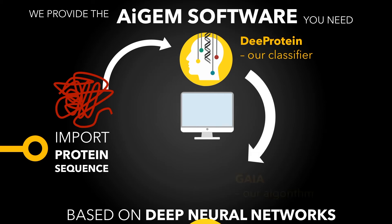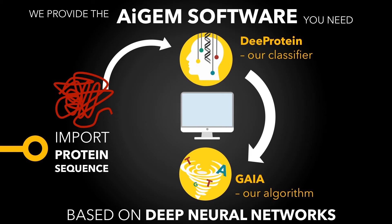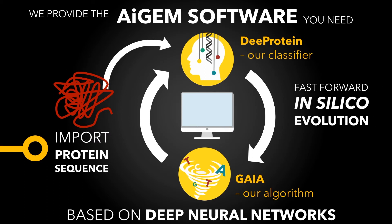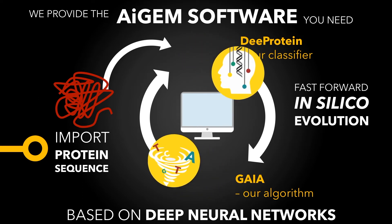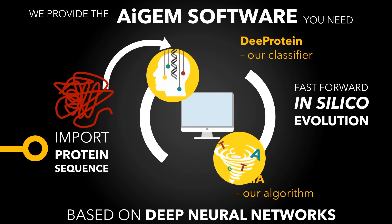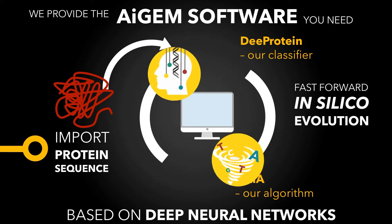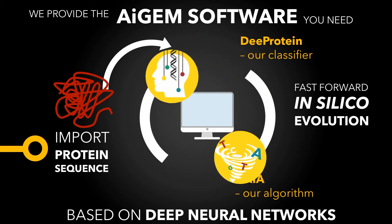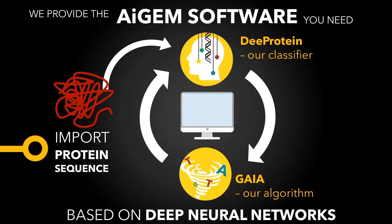Second, transfer your sequence into Gaia, our genetic algorithm-based software that mutates the protein sequence to get a new variant of the protein. Now the cycle closes, as this slightly new sequence is again transferred into DeepProtein and checked for helpful mutations that boost activity levels. As this cycle repeats over and over again, this process is indeed what you could call fast-forward in silico evolution.